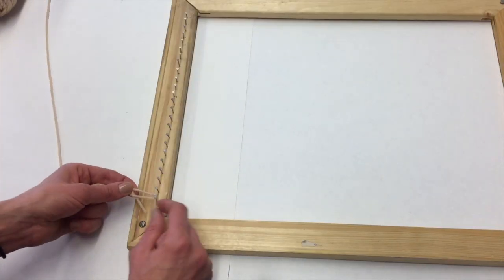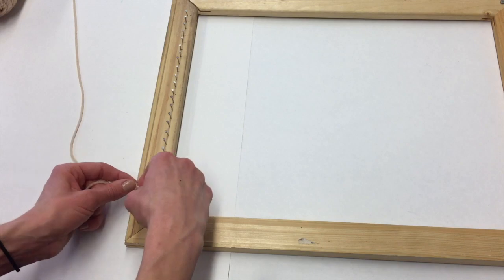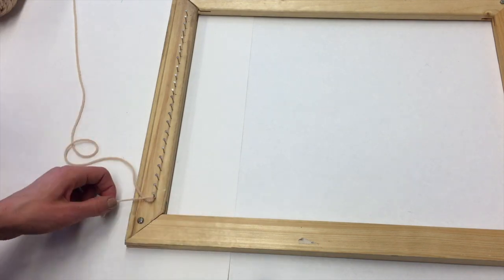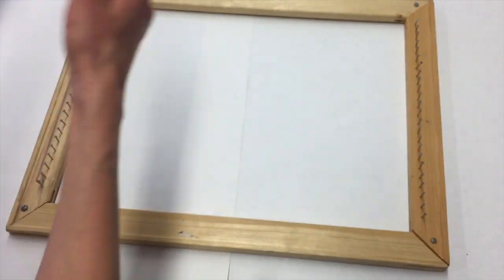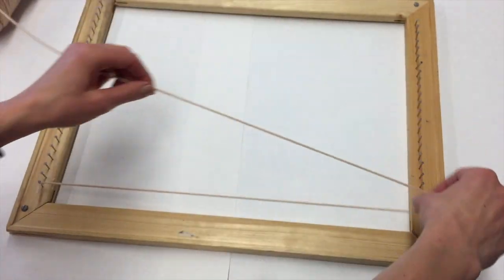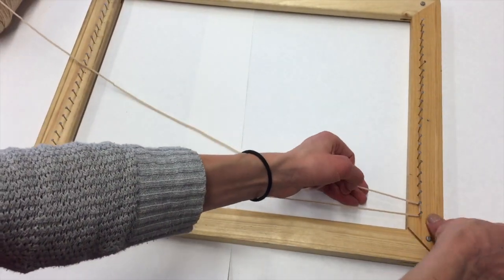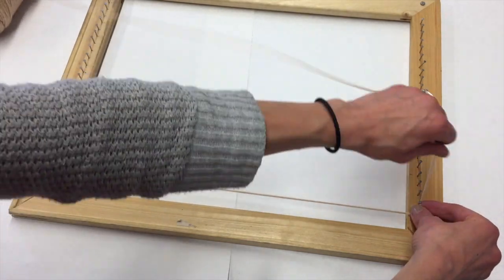I'll start by grabbing my string and tying it onto my first nail. I just use the knot that you use to tie your shoe and tie it twice. You can trim the edge if you'd like. Then I'll take the string and bring it across and wrap it around the first two nails, and then go back the other way.